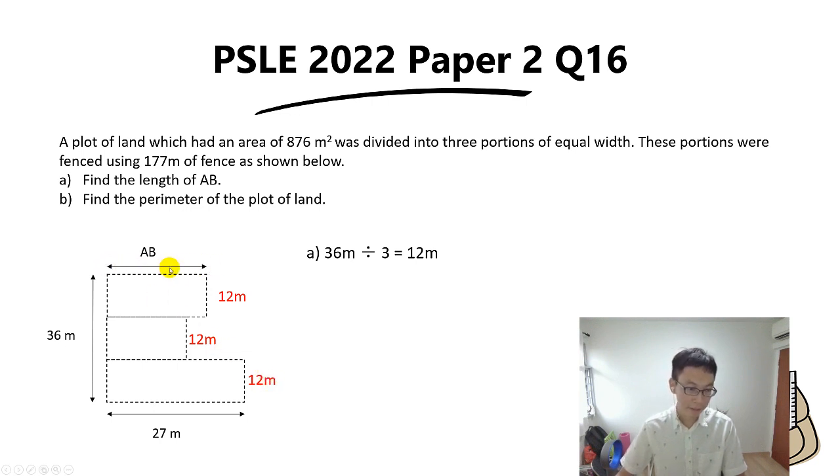Now how do we find the length of AB? To find the length of AB, we're going to take 177 minus 36, then minus another 36, because 12 times 3 gives us 36. And then on top of that, we must also minus another 27 and 27, because these two lengths are the same.